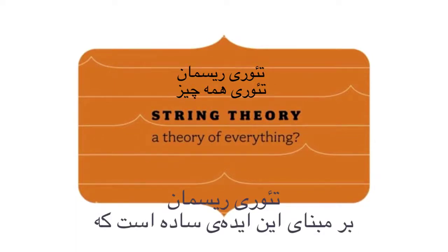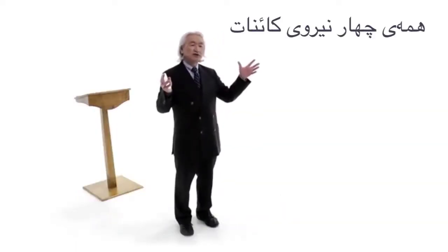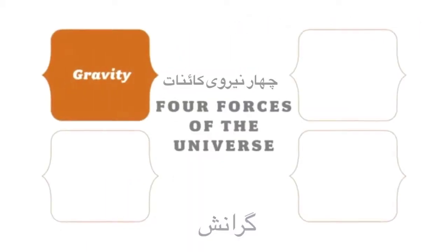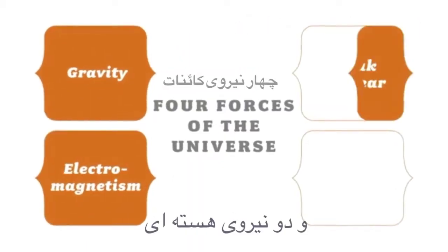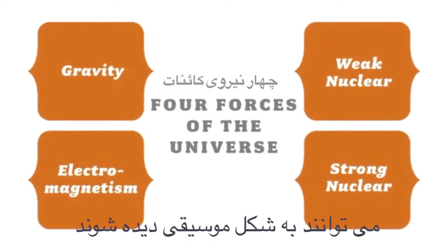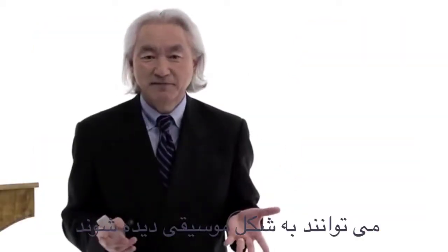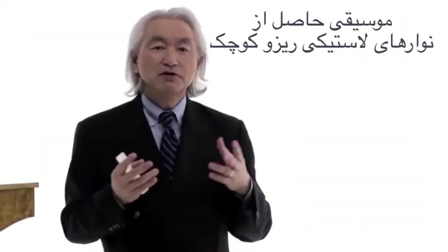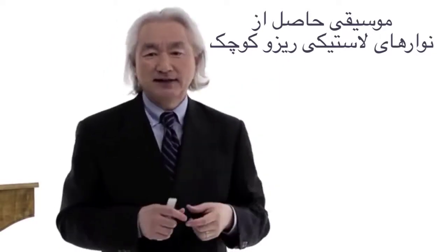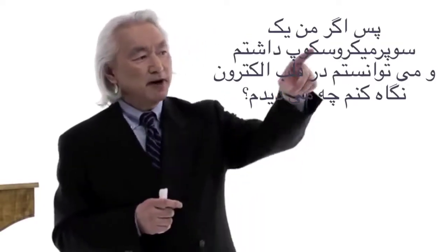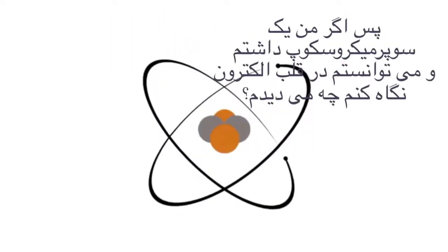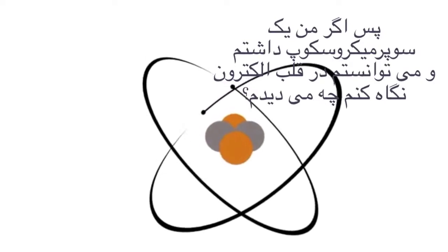String theory is based on the simple idea that all four forces of the universe — gravity, the electromagnetic force, and the two nuclear forces — can be viewed as music. Music of tiny little rubber bands. If I had a super microscope and I could look right into the heart of an electron, what would I see? I would see a vibrating rubber band.